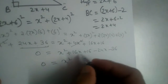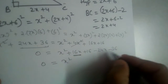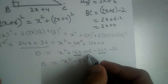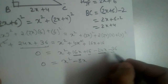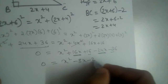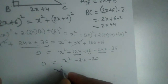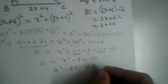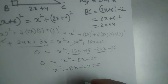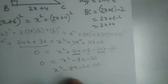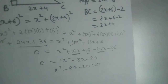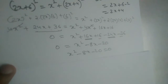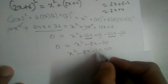Simplifying: 16 minus 24 gives minus 8X, and 16 minus 36 gives minus 20. So we have the quadratic equation X² minus 8X minus 20 equals 0.